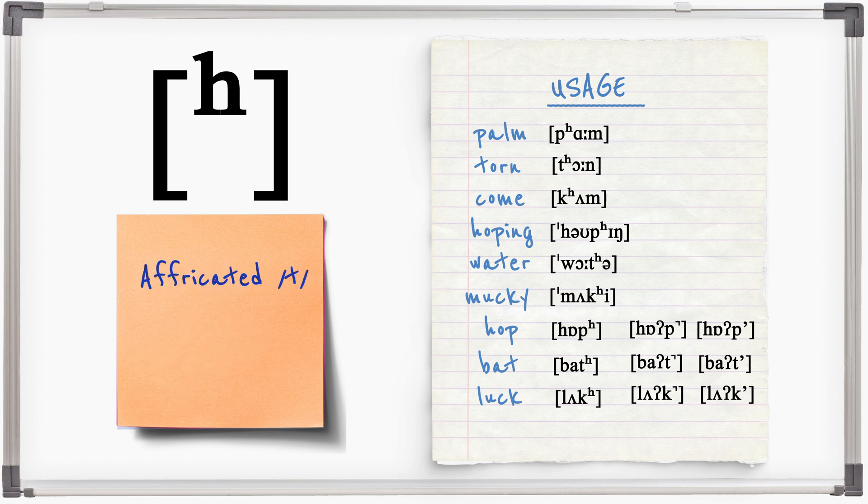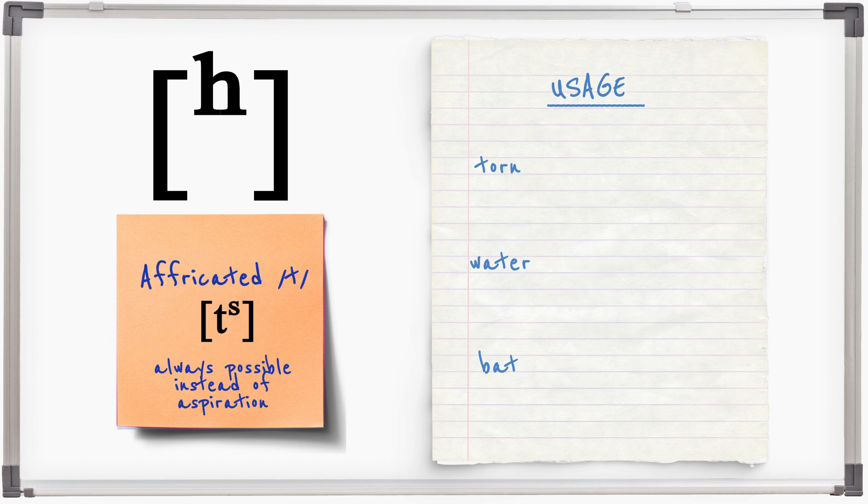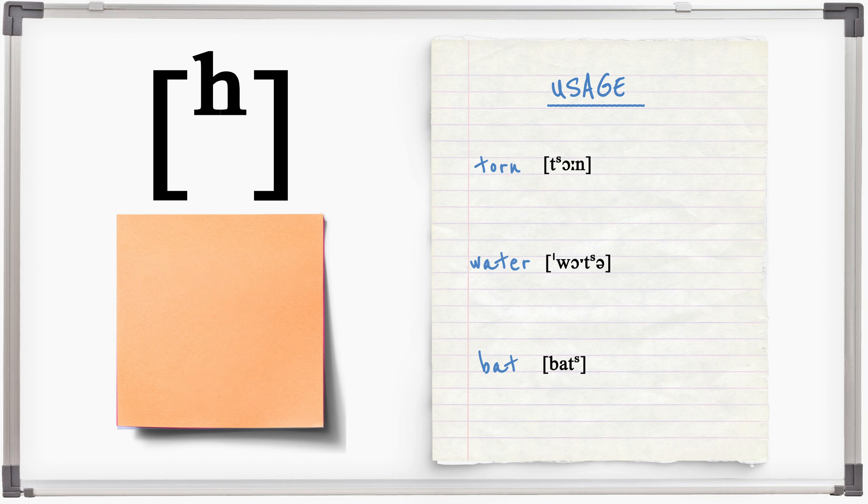T could be affricated, T, instead of aspirated in all of these examples. Torn, Water, Bat. And this is probably the most likely pronunciation in modern GB.